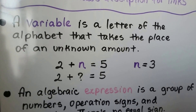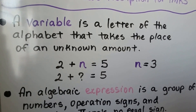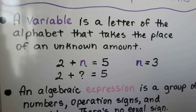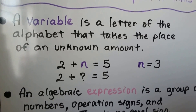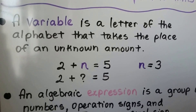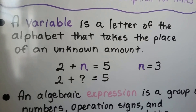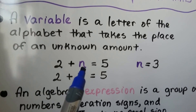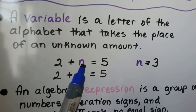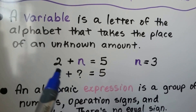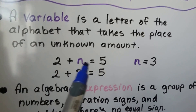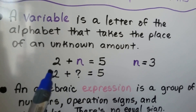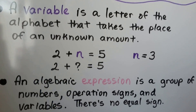A variable is a letter of the alphabet that takes the place of an unknown amount. Back in first grade, you'd see a blank line. Now in algebra, we're going to use a variable, a letter of the alphabet. So 2 plus n equals 5 — the n must be a 3 to make this true.